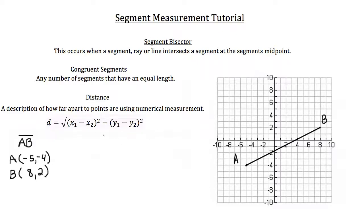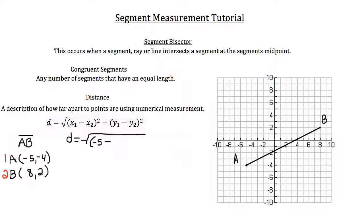Calculating the distance between A and B isn't as simple as a straight horizontal or vertical line where you could just count units — this segment has a positive slope running to the right. Using the distance formula, with A as point one and B as point two: distance D equals the square root of the quantity x1 minus x2 squared plus y1 minus y2 squared, which gives us the square root of (negative 5 minus 8) squared plus (negative 4 minus 2) squared.